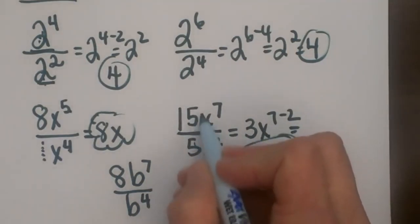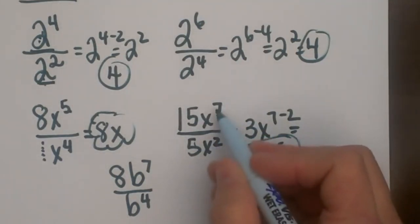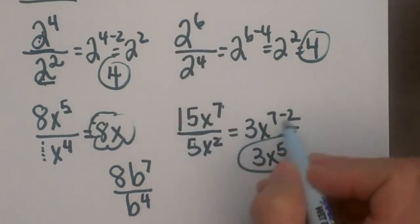So the rule is you divide the coefficients but subtract the exponents.